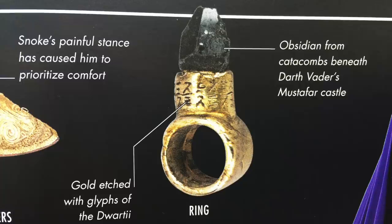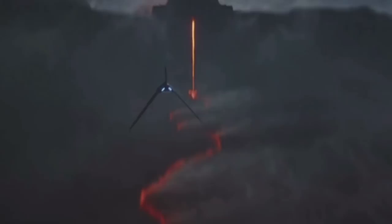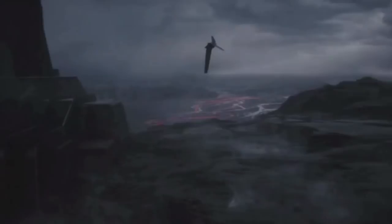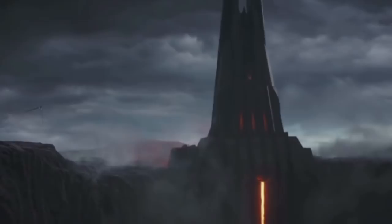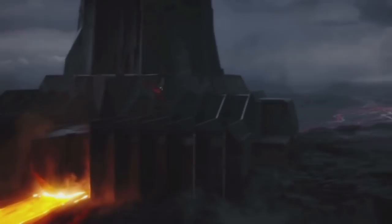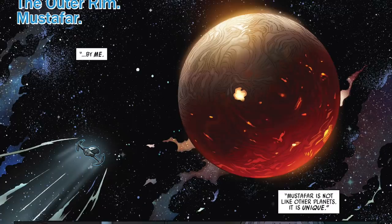Let's start by looking at the obsidian portion of Snoke's ring and its connection to Vader. Within the Rogue One novelization and visual guide, we learn that Darth Vader's dark, monolithic castle on the planet of his greatest defeat was constructed out of obsidian. This allowed the central tower of the castle to act as a conduit for the immense power of the dark side that lay beneath the surface of the planet. We know that Snoke did not obtain the obsidian from the castle itself, but from the catacombs that were underneath it.